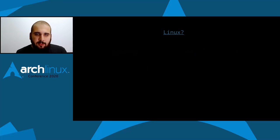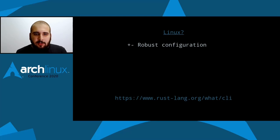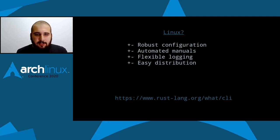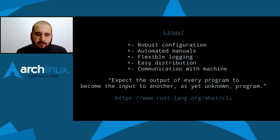Rust provides a robust configuration — it will deal with namespaces and formats for us. It can generate manual pages for the application automatically. It has a lot of logging libraries you can configure with different targets and different styles. It's easy to distribute a Rust application on Linux because everything compiles down to a single binary, with no need for users to have runtime libraries installed — everything is handled by Cargo. You can also communicate with machines using Rust, as it supports many output formats. There's actually a quote from the Unix philosophy in the official Rust documentation.